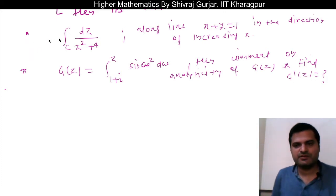Respect to complex variable functions. This question: dz divided by z square plus 4, integration along the curve C where C is given by x plus y equals to 1.